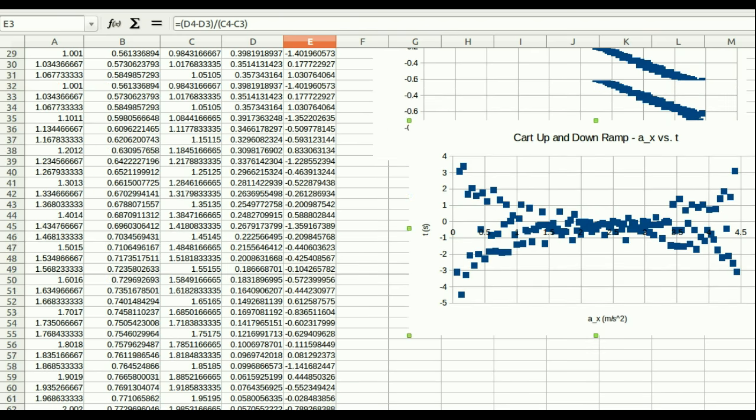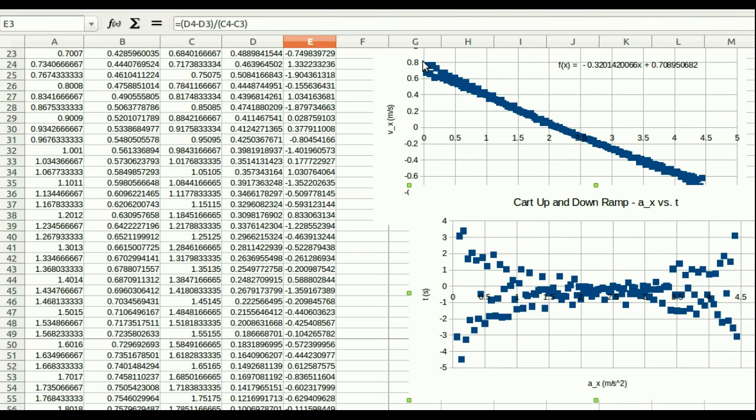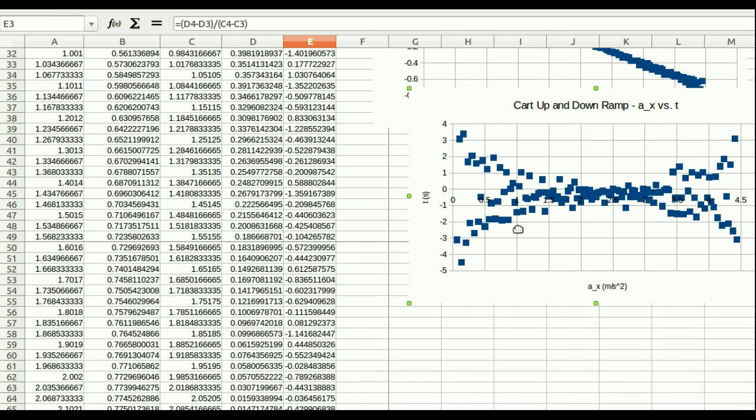And this is just because we made that approximation of average velocities being treated as if they're instantaneous velocities. And then we made the approximation again, treating these velocities to get average accelerations again. And so, we've made that approximation twice. And so, our acceleration data is pretty noisy. And that often happens.